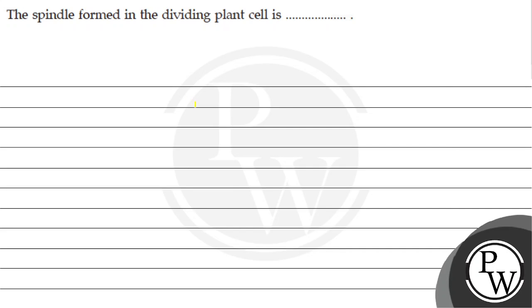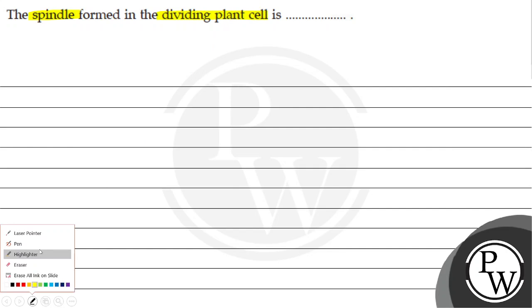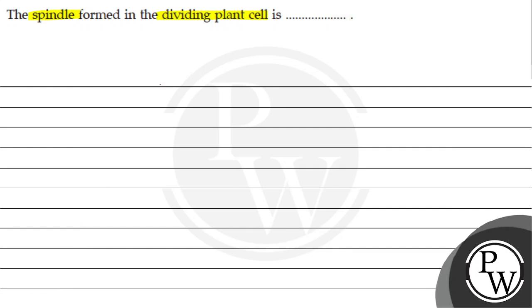Hello Bachchon, let's see the question. The question says, the spindle formed in the dividing plant cell is dash. The key concept of this question is spindle in plant cell.